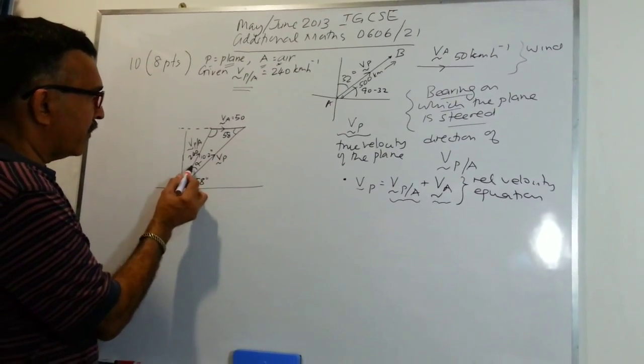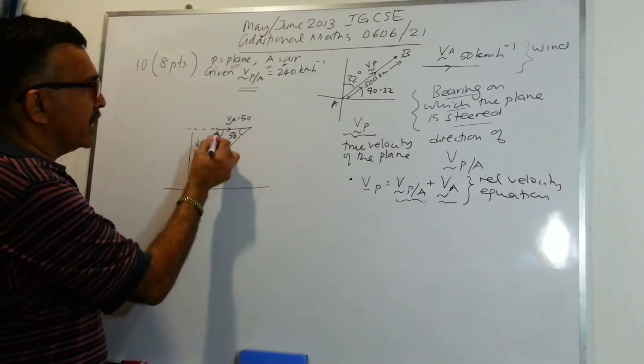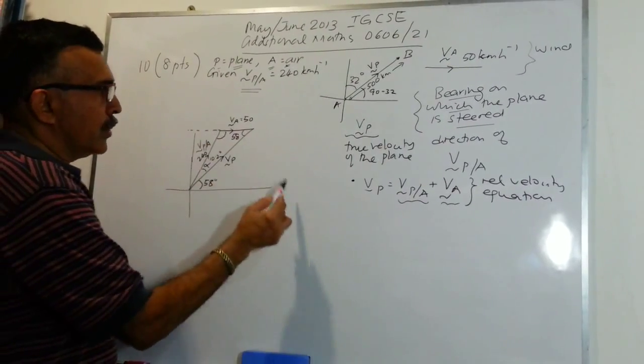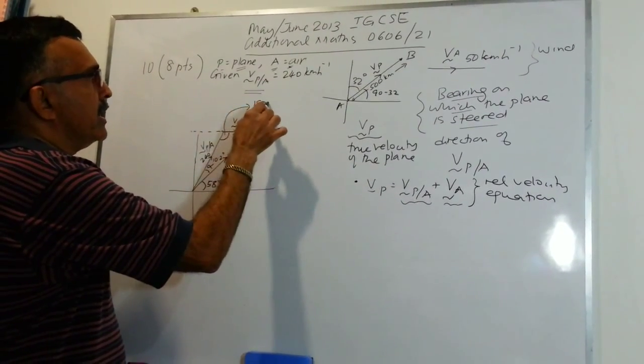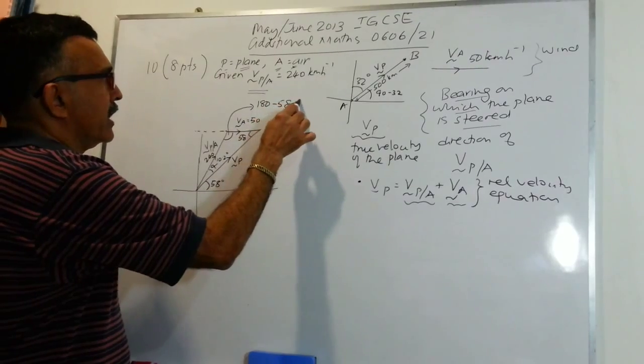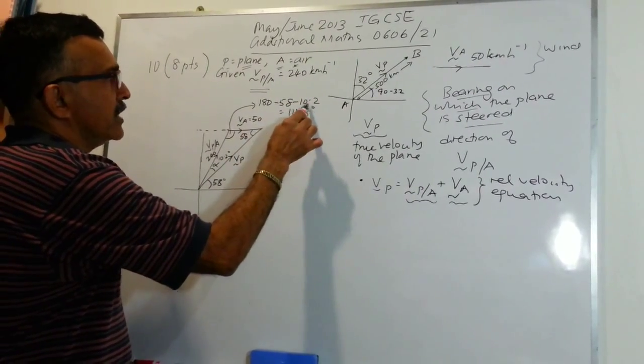I've indicated this angle alpha equals 10.2, and this angle is 58, so we can find this angle here. It will be 180 minus 58 minus 10.2, you will get 111.8 degrees.